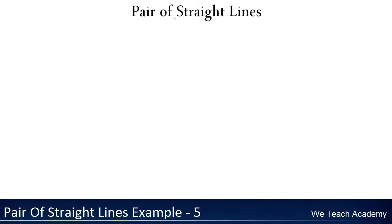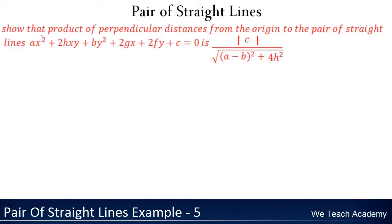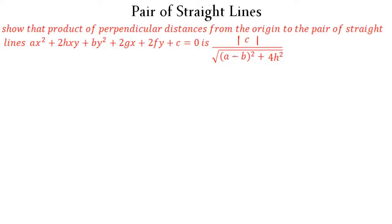Hello friends, welcome to Vedic Academy. We are going to discuss an example under the concept of pair of straight lines. We need to show that the product of the perpendicular distances from the origin to the pair of straight lines is equal to |c| divided by the square root of (a minus b) whole square plus 4h square.